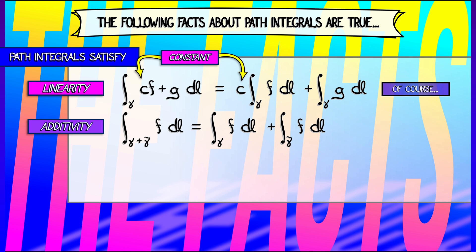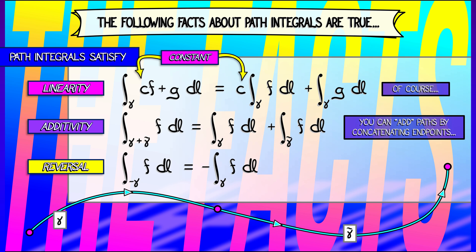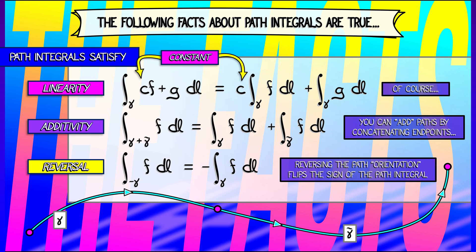Additivity is another property that should be familiar. If I have two paths, gamma and gamma tilde, that abut, I can concatenate these paths — do gamma, then do gamma tilde. Integrating f over that long path is the sum of the integrals of f over the path components. Does that look familiar from single variable calculus? If so, then orientation reversal will also make sense. Given a path gamma and a function f, if you integrate f over gamma and then integrate f over minus gamma — that is the same path but with the endpoints reversed, going backwards — reversing the orientation reverses the sign, adding a minus sign to that integral. All of the standard properties of scalar path integrals make sense based on what you know from single variable calculus.